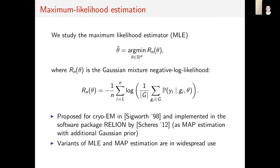Our work studies the maximum likelihood estimator for this problem. That's the minimizer of the Gaussian mixture negative log likelihood as shown. This method was proposed for cryo-EM in the 90s, and it's been implemented in several software packages. It's widely used in both chemistry and biology.